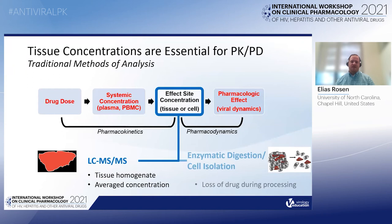Effectively getting the right amount of drug to the right place for the right amount of time relies on accurate knowledge of drug concentrations at the effect site. The tried and true method we use for this purpose is LC-MS-MS of tissue homogenates, which provides an average concentration of a sample.